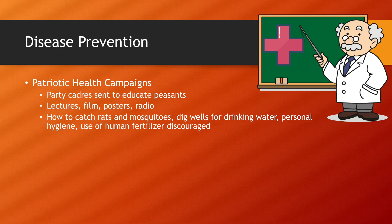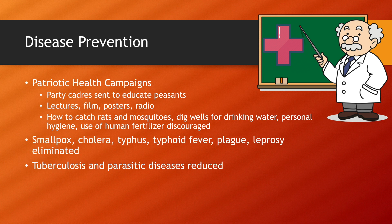What was very common in the rural areas was that they used their own feces to fertilize the crops. Many of the peasants were ignorant and did not know about basic health care. So, what the party cadres did is they discouraged the use of human fertilizer and taught them about basic health care. And that was actually a very huge success — all these diseases were virtually eliminated in the countryside, and tuberculosis and parasitic diseases were significantly reduced.